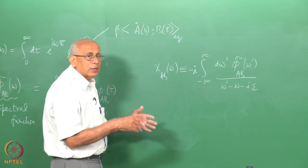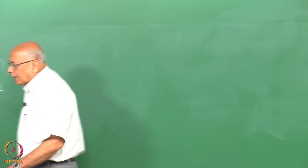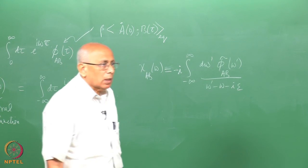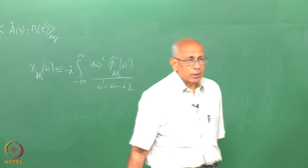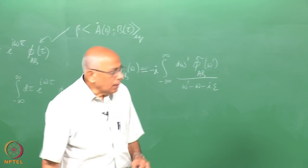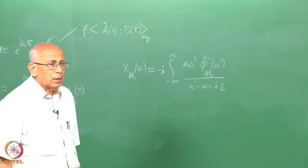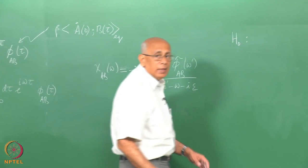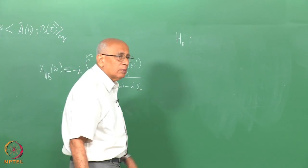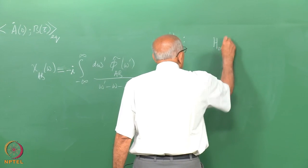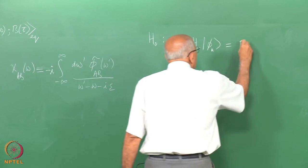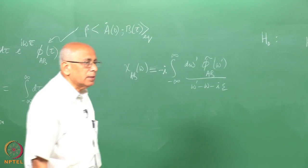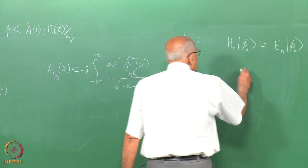Now let us see what the content of this response function is in general for a quantum mechanical system. We take A and B to be Hermitian operators corresponding to physical observables, and assume a discrete spectrum of the Hamiltonian H-not for notational simplicity. The Hamiltonian H-not has a complete set of states labelled collectively by n, so H-not on phi_n equals E_n times phi_n, where n runs 0, 1, 2, 3... This is an orthonormal basis: inner product phi_n phi_m equals delta_nm, and the sum over n of phi_n times phi_n equals the identity operator — a complete orthonormal set.